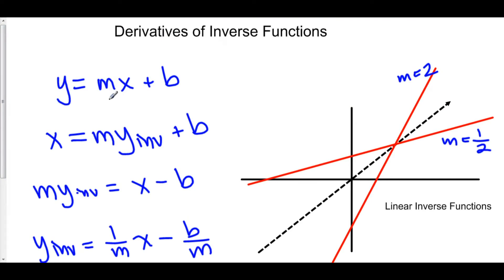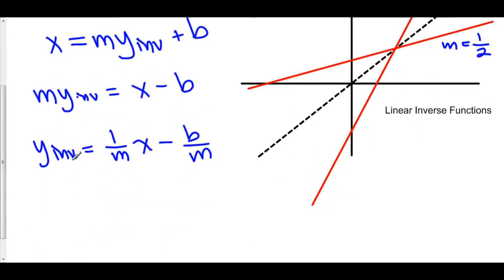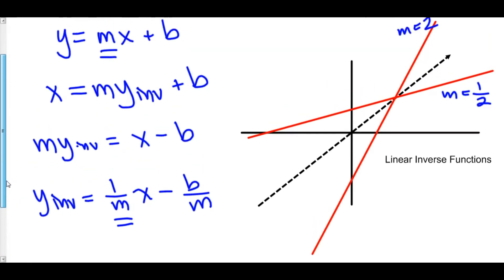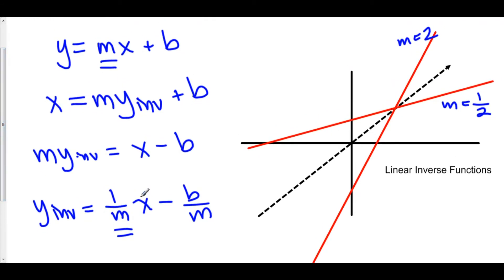Now you'll notice that the slope of y is m, and the slope of y inverse is 1 over m. So for linear inverse functions, the derivatives are multiplicative inverses of each other.